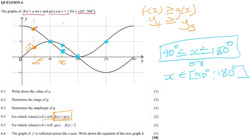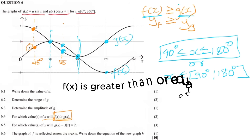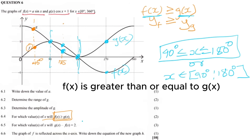At x = 270°, function g of x is on the positive y values while f of x is on the negative y values, so g is greater than f there — this does not answer our question. We want f of x to be greater than g of x, and that occurs between 90 degrees and 180 degrees.